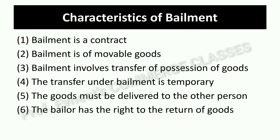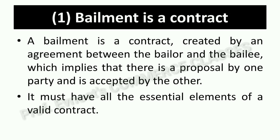Next are the characteristics of bailment. Bailment has six characteristics which we will discuss one by one in detail. First: bailment is a contract. Just like other contracts, bailment is also a contract. It contains all the essential elements of a valid contract as taught under Section 10. Bailment is a contract created by an agreement between the bailer and the bailee, which implies there is a proposal by one party and it is accepted by the other.